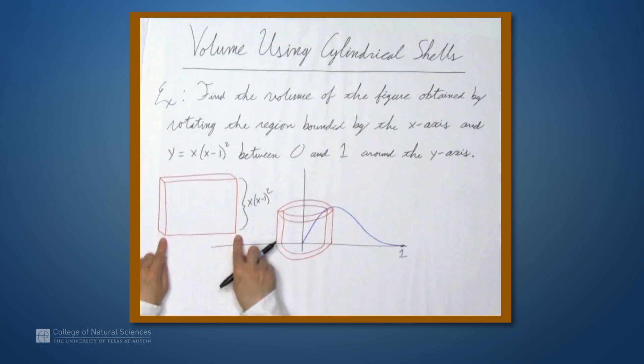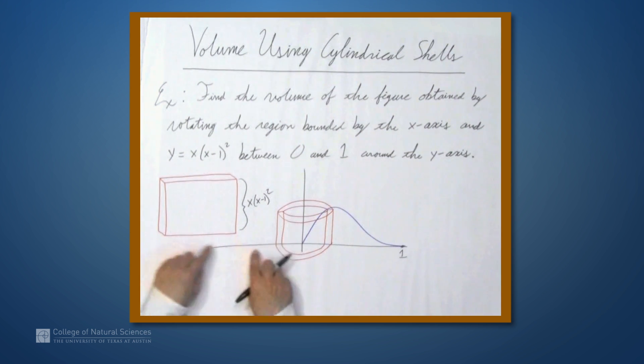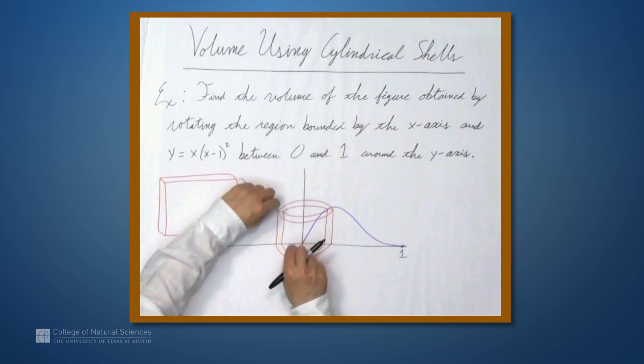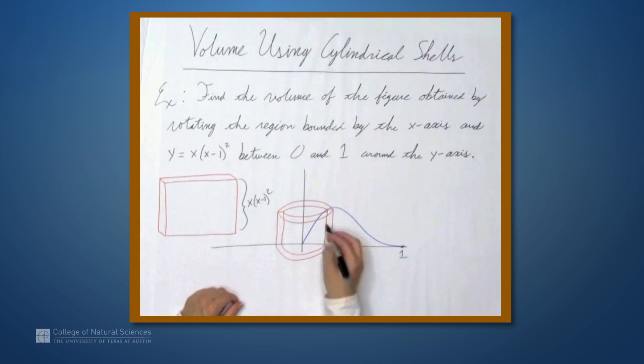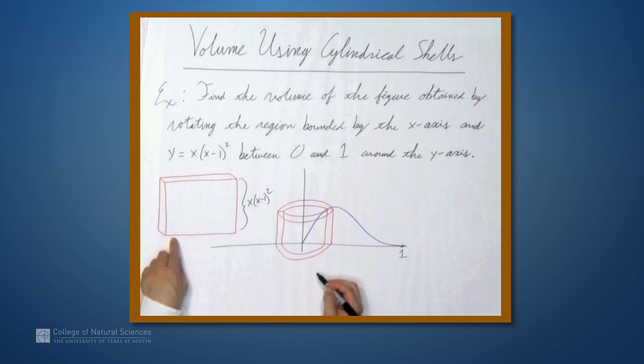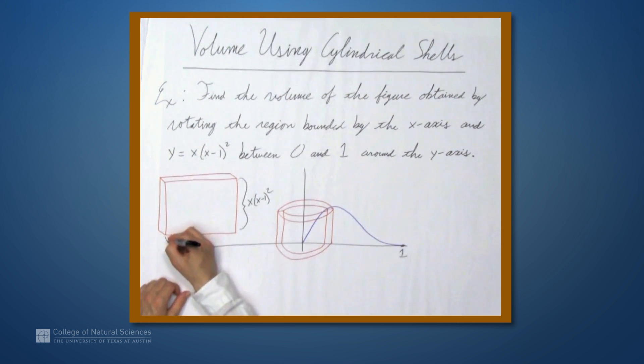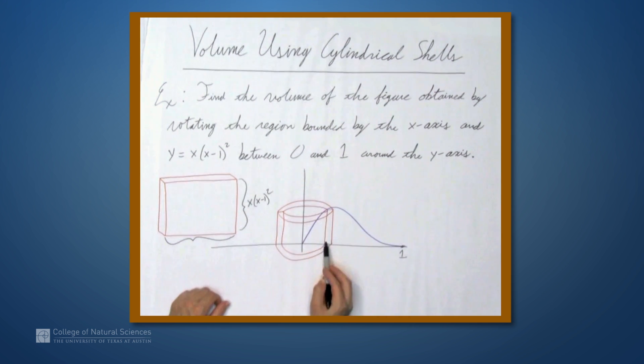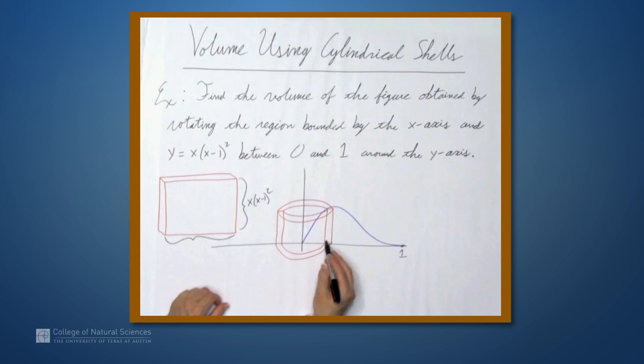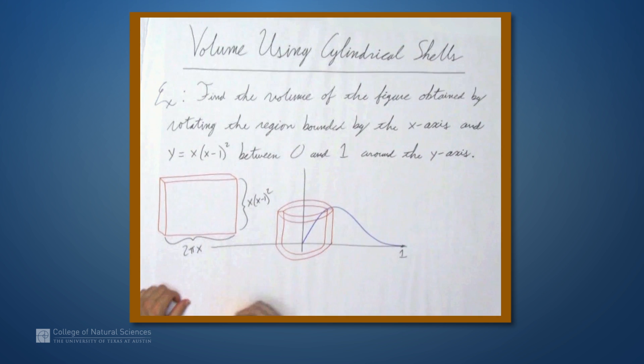What about the width of the rectangular solid? Well, this width comes from the circumference of the cylindrical shell, right? We're breaking it right here and then flattening it out. So, the circumference of the cylindrical shell is the width of the rectangular solid. And the circumference, we can get that in terms of the radius, and the radius is the x value here. So, it's going to be 2π times x, right? 2π times the radius.